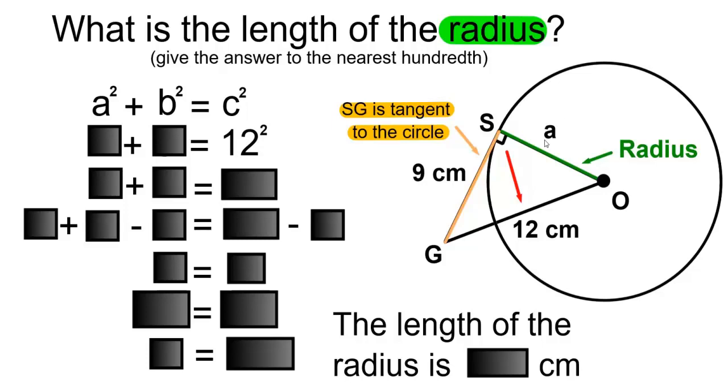We'll call our unknown side A. So A squared plus 9 squared equals 12 squared. 9 squared will be 81, and 12 squared will be 144.